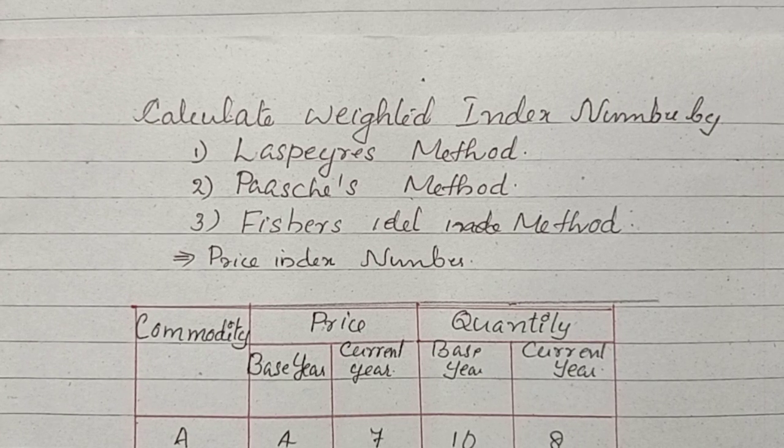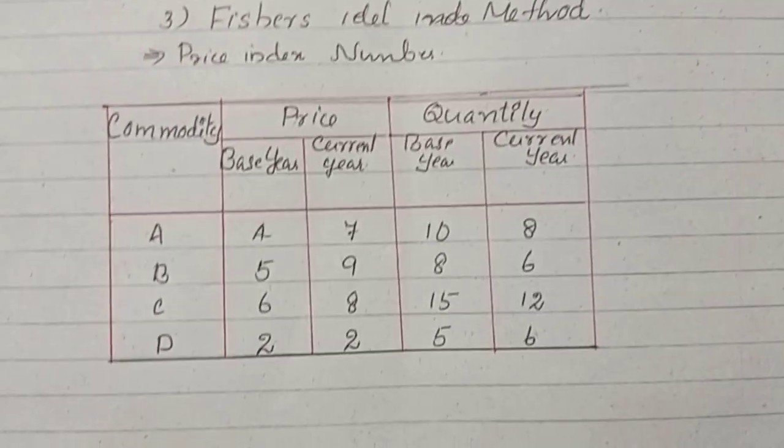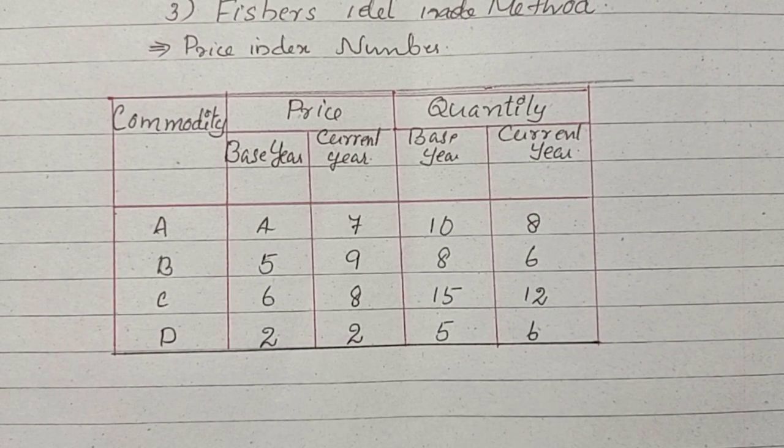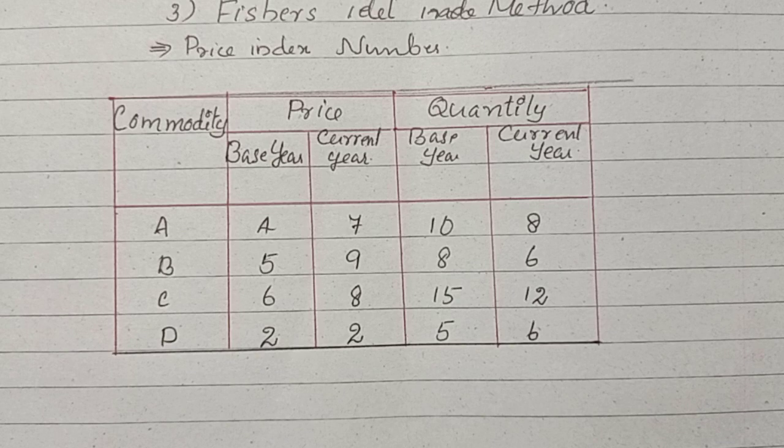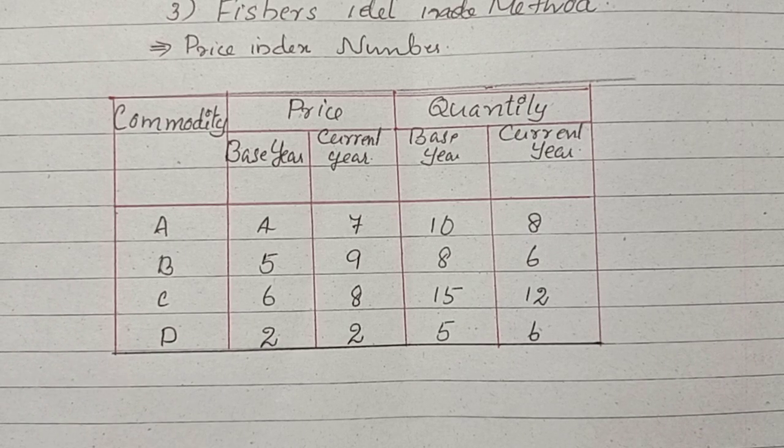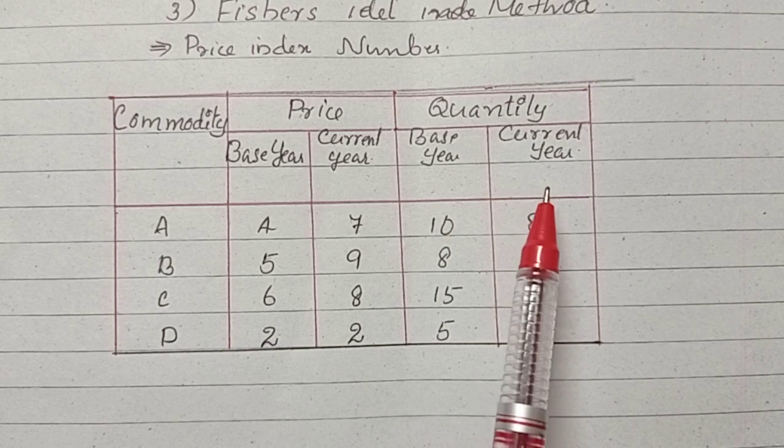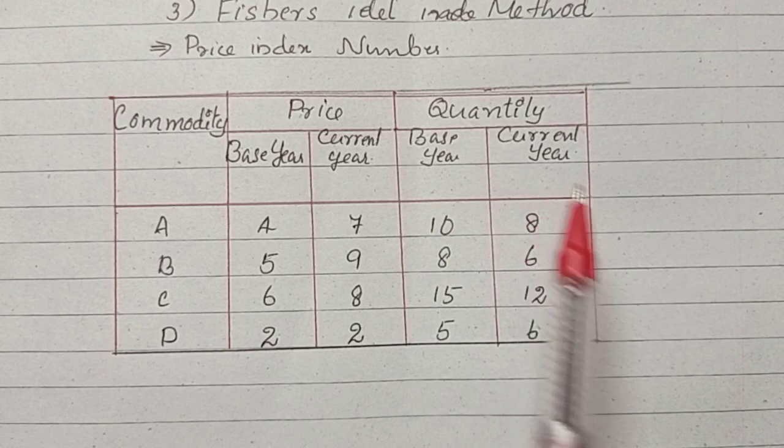We have to calculate the index number of the price. In this question, commodity is given, price in the base year is given, price in the current year, quantity in base year, and quantity in current year are also given. Price in the base year is P0, price in the current year is P1, quantity in the base year is Q0, and quantity in the current year is Q1.